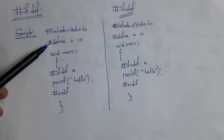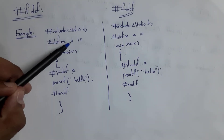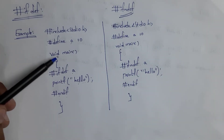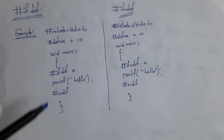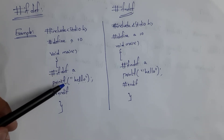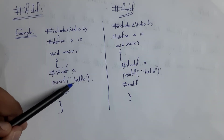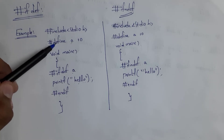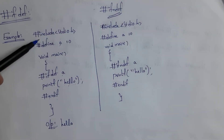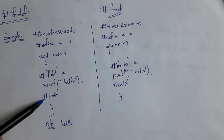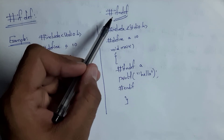Here is an example program for the #ifdef directive. After #include stdio.h, I write #define A 10, defining macro A with value 10. Inside void main, I write #ifdef A — meaning: if macro A is defined, then print "hello". At the end I write #endif to close the conditional compilation block. Since I did define macro A, the output will be "hello".